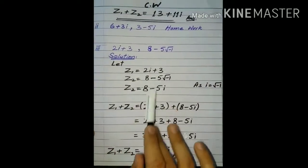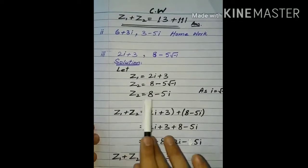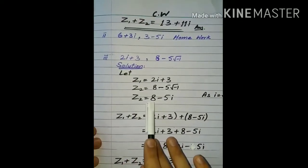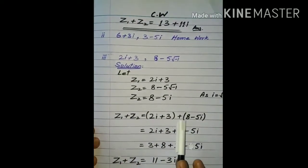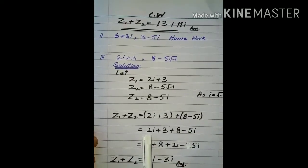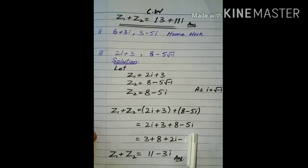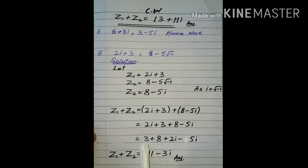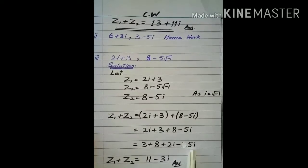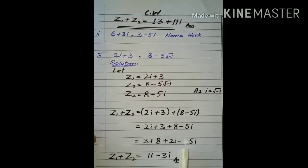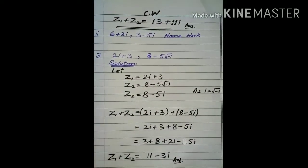اب ان دونوں کو ہم نے add کرنا ہے — Z1 plus Z2۔ تو Z1 کی value: 2 iota plus 3، پھر plus، پھر Z2 کی value: 8 minus 5 iota۔ ہم نے parenthesis ہٹا دی اور اس کو arrange کیا — real کو real کے ساتھ: 3 plus 8، اور imaginary کو imaginary کے ساتھ: plus 2 iota اور minus 5 iota۔ تو ہمارے پاس subtraction process ہو جائے گا، 5 سے 2 نکل جائے گا اور sign of greater term minus آ جائے گا۔